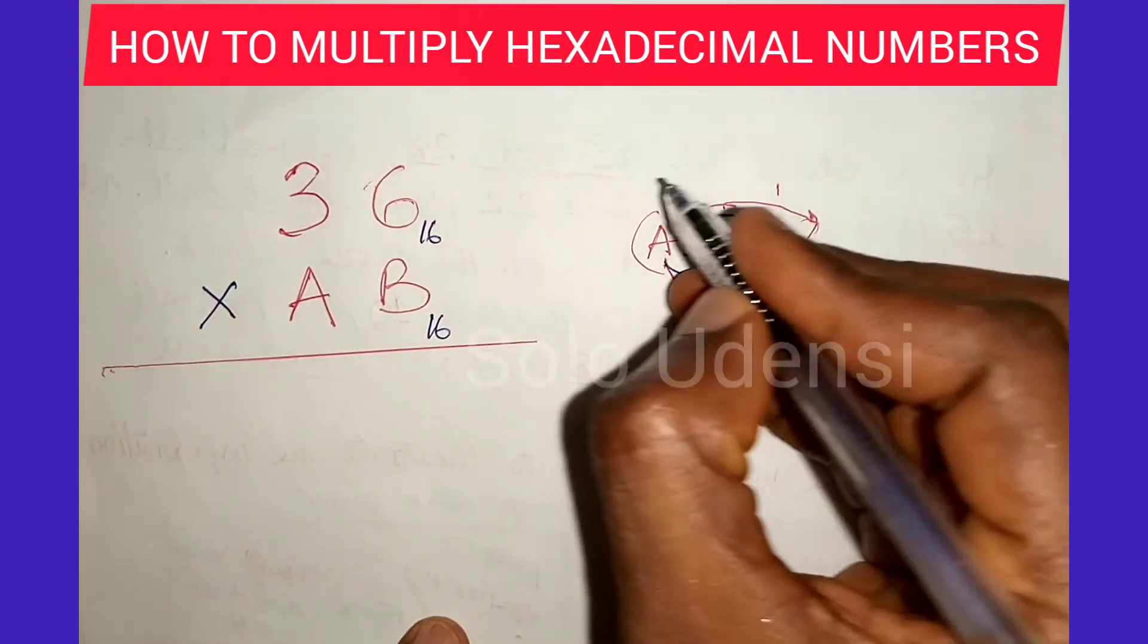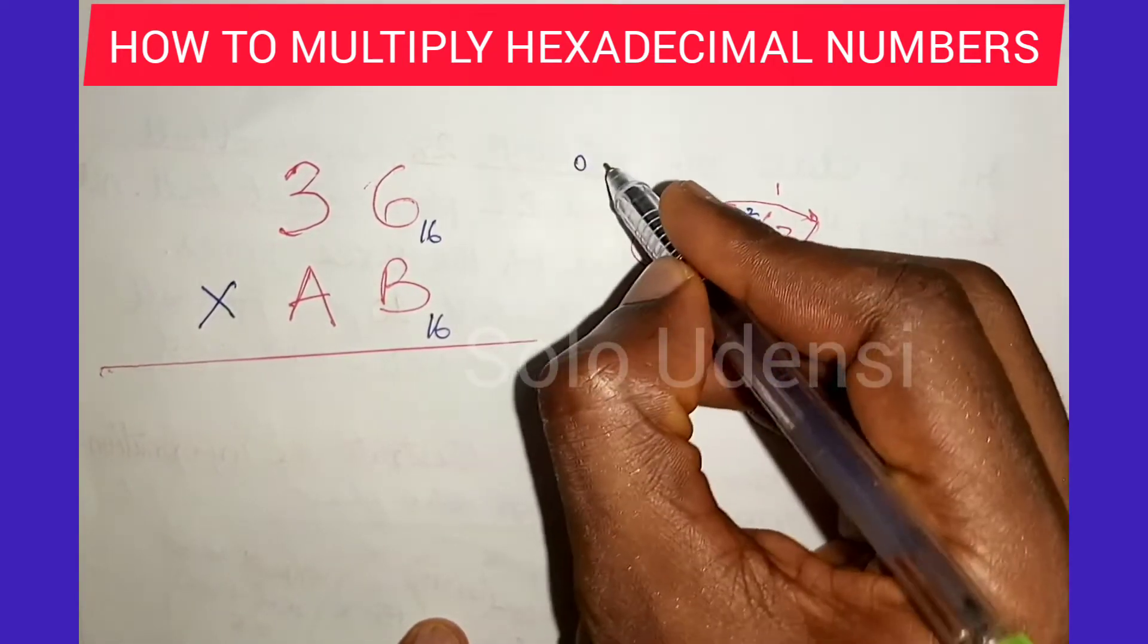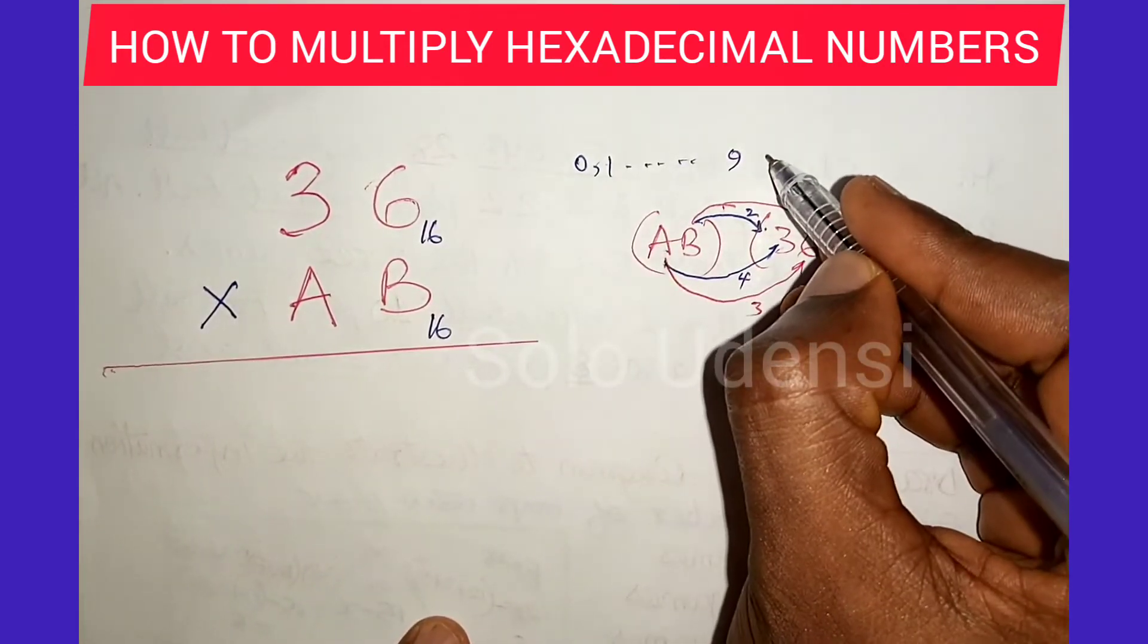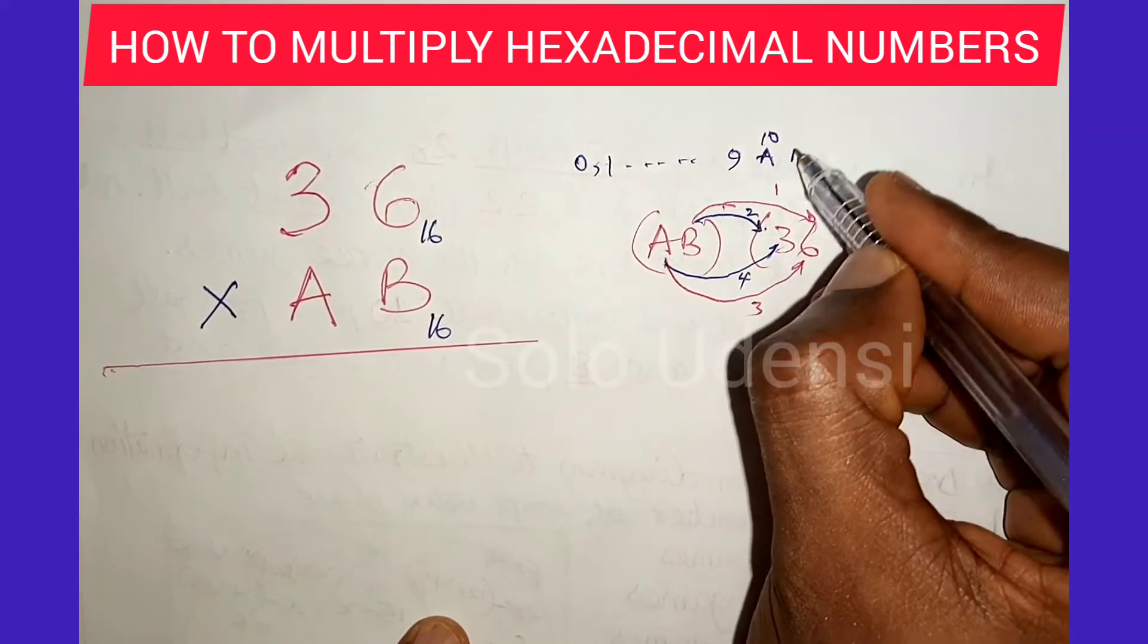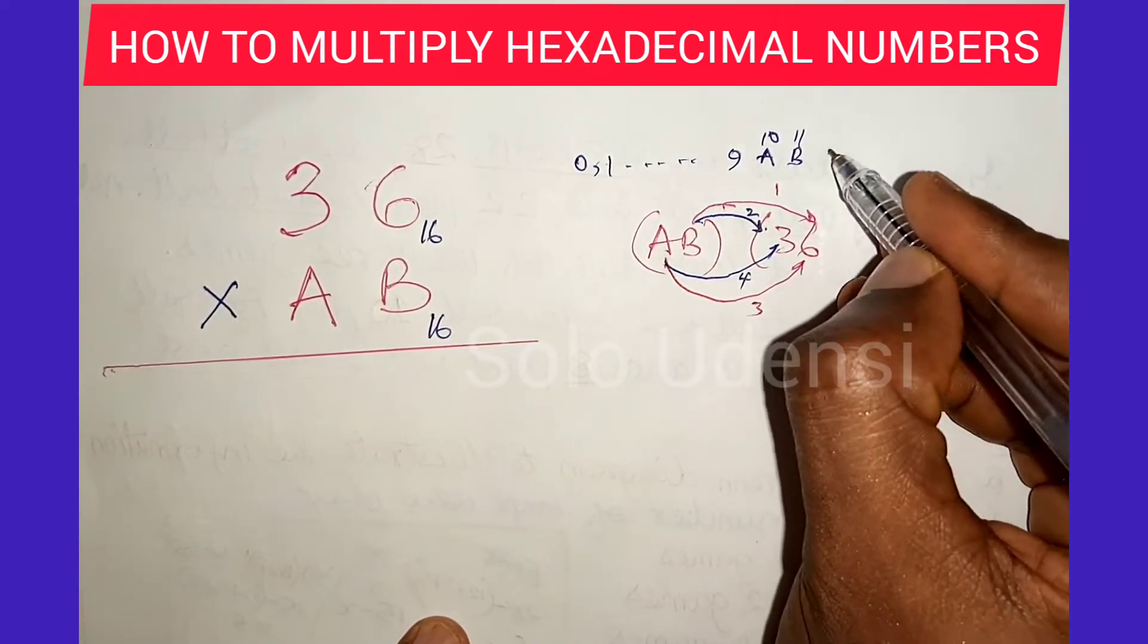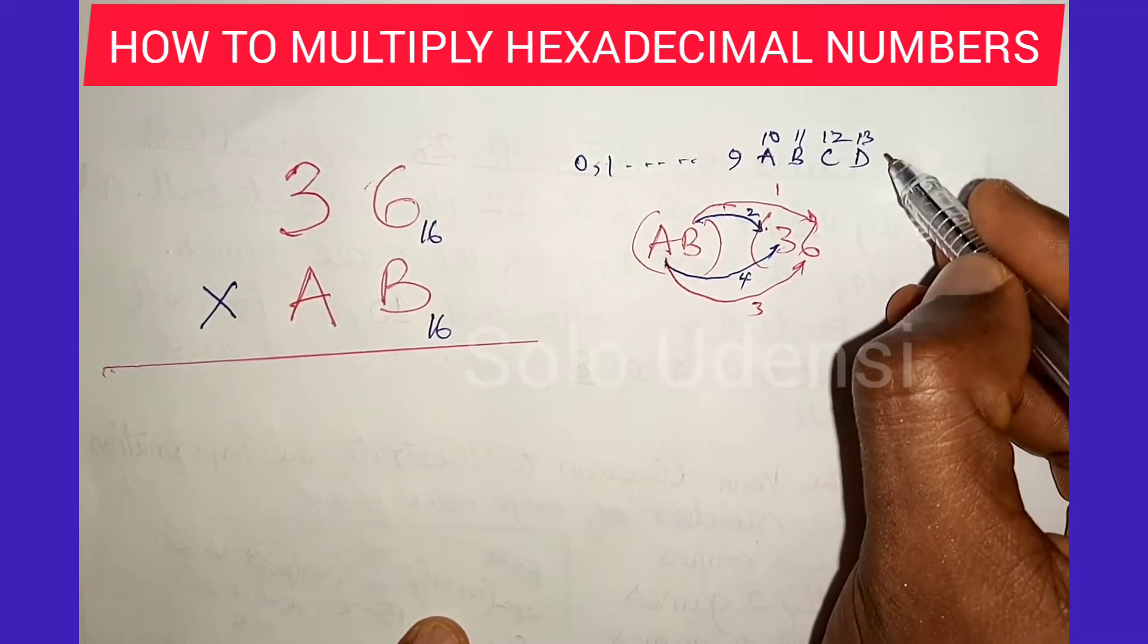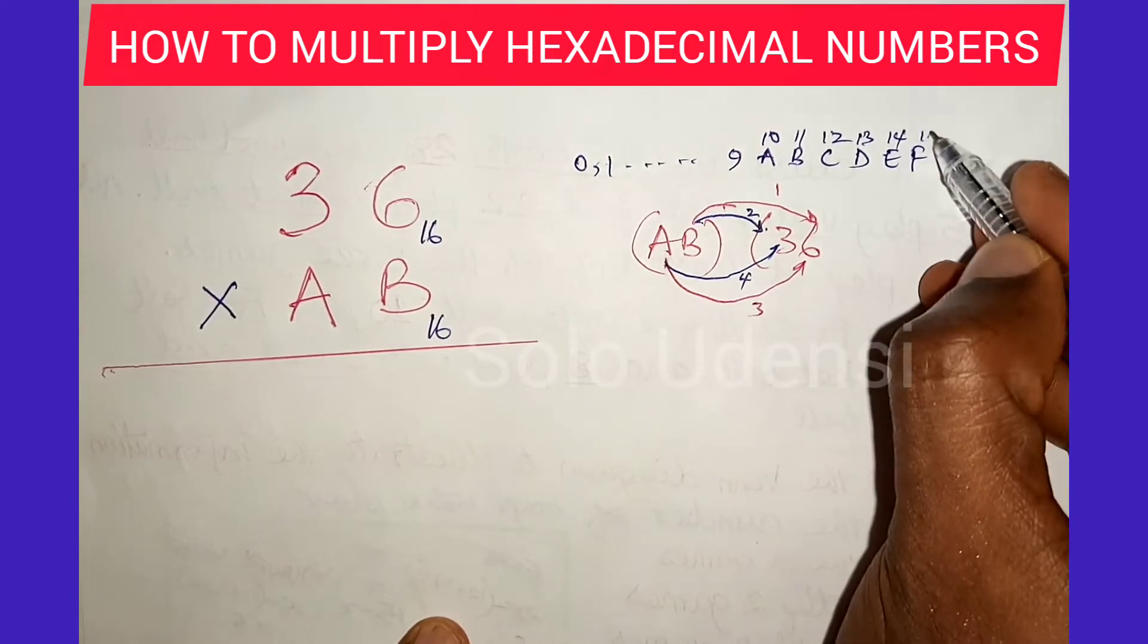B times, remember in base 16, we start from 0, 1, 2, through 9. The 10th one is A, and B is the 11th one, C is the 12th one, D is the 13th one, E is the 14th one, and F is the 15th one.